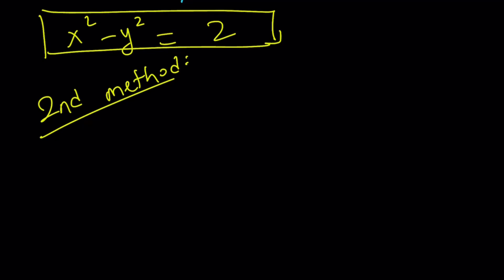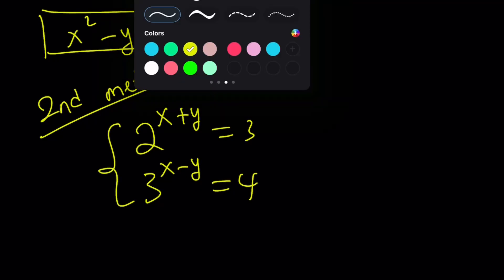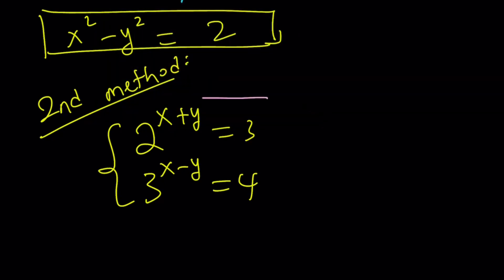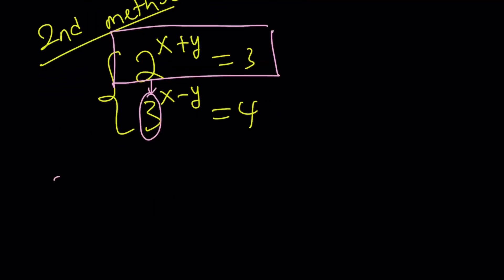But you also learned something from the first method, at least using the properties of logs. So the second method is as follows. Let me rewrite the original problem first: 2 to the power x plus y equals 3, and 3 to the power x minus y equals 4, and we're looking for x squared minus y squared. Since 3 is equal to 2 to the power x plus y, I'm going to substitute that here. So we have 3 to the power x minus y, and 3 can be replaced with 2 to the power x plus y, then raise it to the power x minus y, and 3 to the power x minus y is equal to 4.